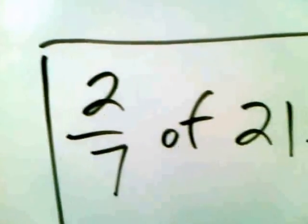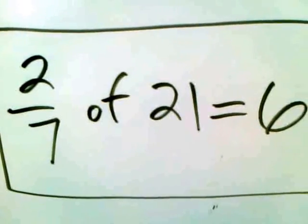So the answer to 2/7 of 21 equals 6. That's a way to do a fraction of problem by multiplying fractions.